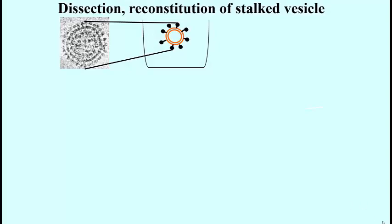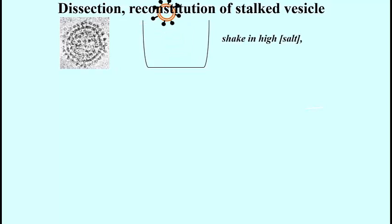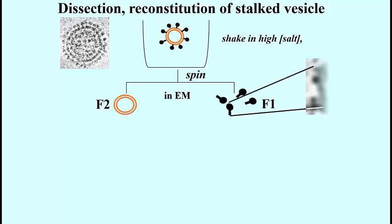Racker's lab was able to dislodge these lollipop particles from the membranes by shaking them in a high salt concentration solution. The remaining smooth vesicles moved to the bottom of a centrifuge during a spin, while the stalked particles remained suspended. A single stalked particle can be seen in the electron micrograph on the right.